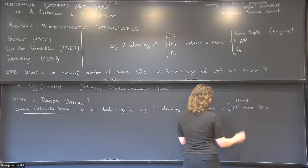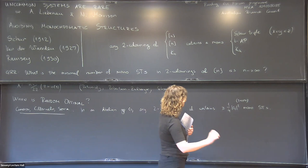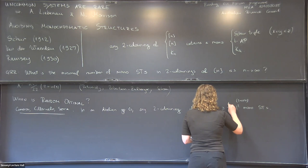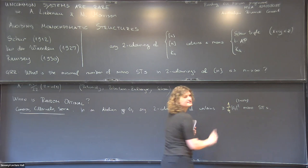This was an observation by Cameron, Cilleruelo, and Serra: in any abelian group G, any red-blue coloring contains at least a quarter of monochromatic Schur triples, asymptotically — so the density of monochromatic solutions is at least 1/4. For the rest of the talk I'll focus on the density of solutions.